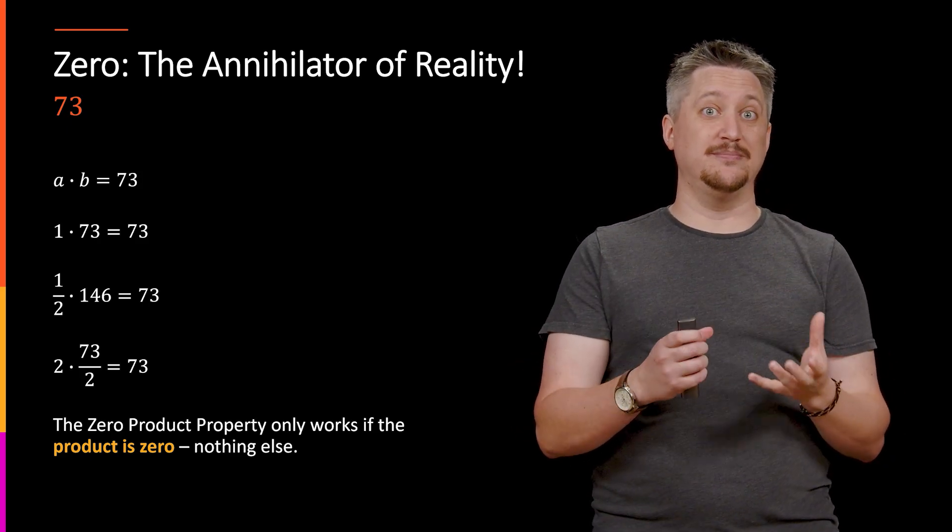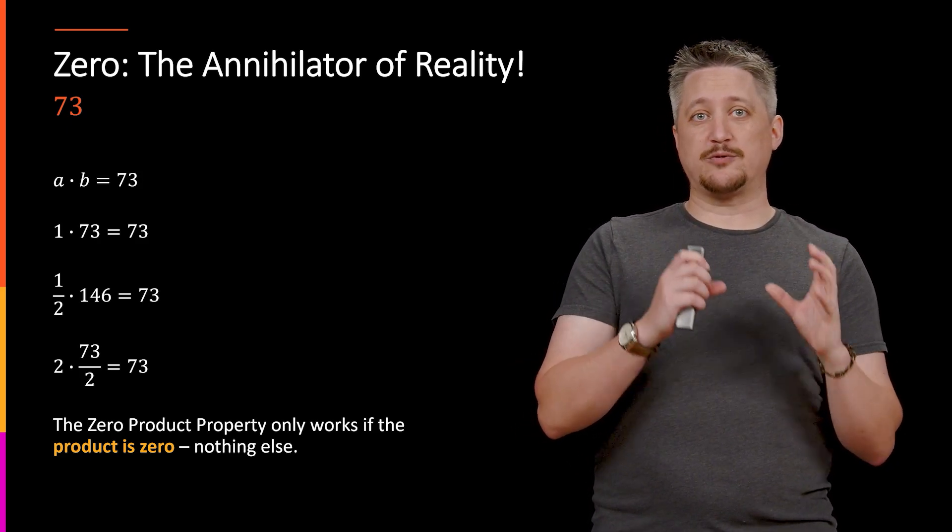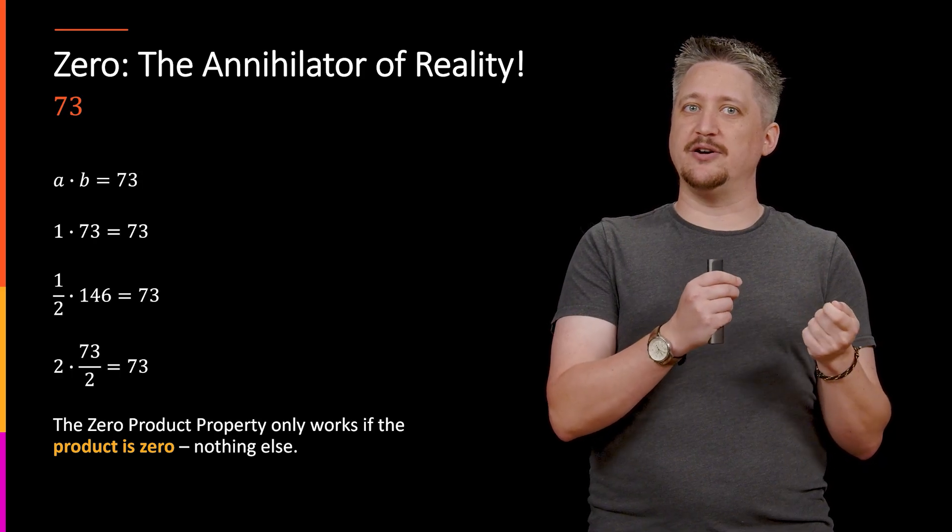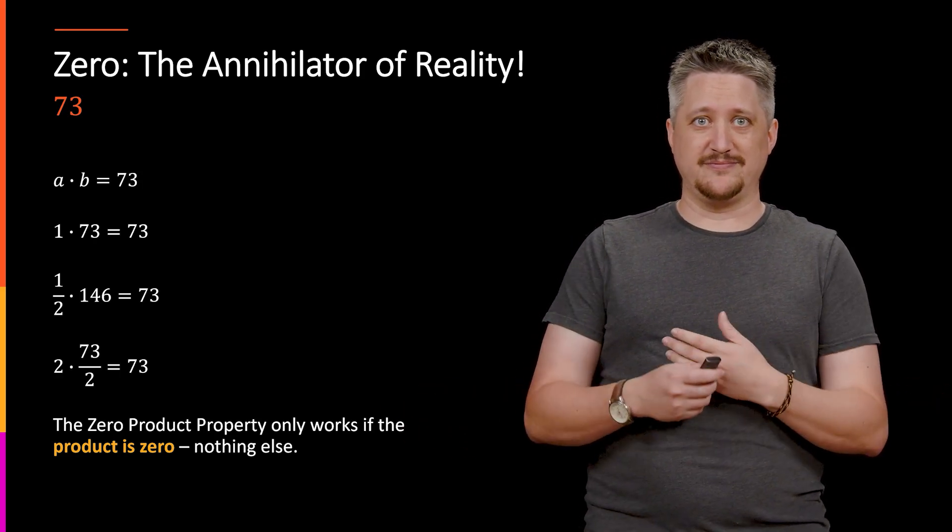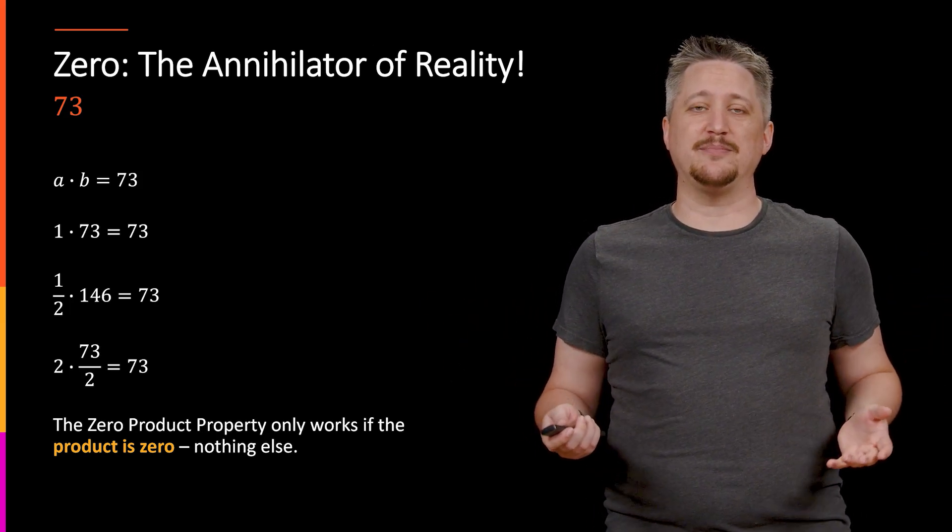0 is a very special number. And so when we know the product is 0, that's what tells us one of the other has to be 0. If the product isn't 0, we know nothing. We are completely out of luck. There's nothing we can do at that point.